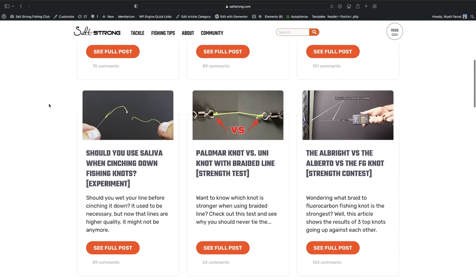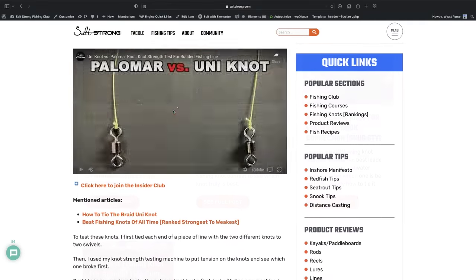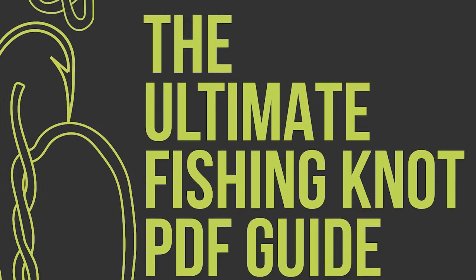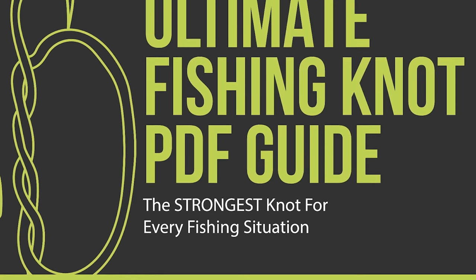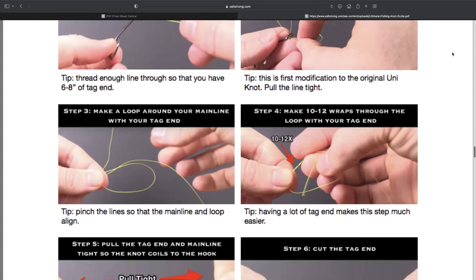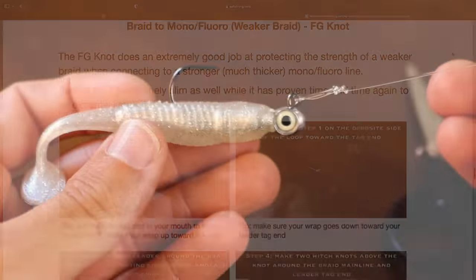And if you guys want to see more knots like this, we do have a knots ranking page on saltstrong.com. Lots of really great information there and a free PDF guide that you guys can bring out on the water with you if you want to keep all that knot information handy. So definitely check out some of those tips and go to saltstrong.com.